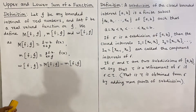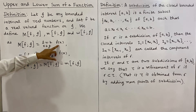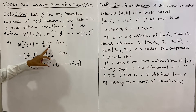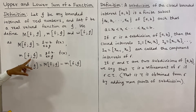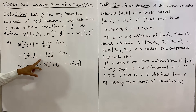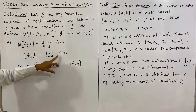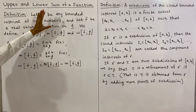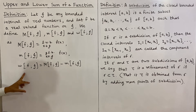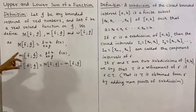Capital M of f on interval J is defined as LUB — least upper bound — of f(x) where x belongs to the interval. The least upper bound is roughly the maximum value of the function. Small m of f on J is defined as GLB — greatest lower bound — of f(x) where x belongs to the interval J. Omega of f on J is equal to the difference of capital M and small m.